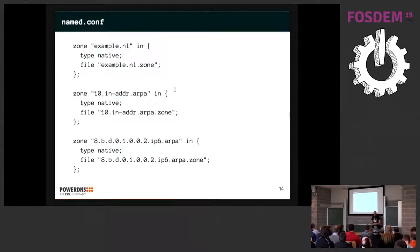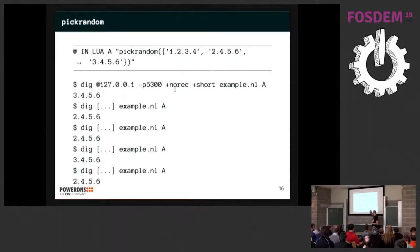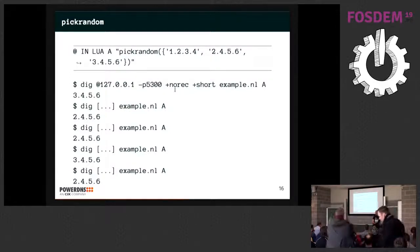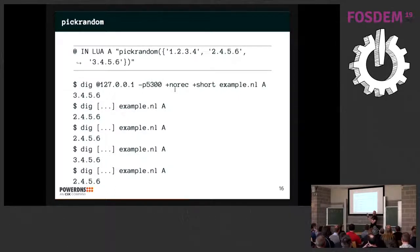Here is the named.conf with example.nl and two reverse zones. This is the whole zone — if you get the slides, you can copy-paste it and it'll work. For example.nl, I created a LUA A record with pick random with a couple of addresses. I wanted to give a live demo, but I don't really like the demo gods — and I don't have HDMI on my laptop. So you just have to believe me: I have a list of three addresses, and every time I run a dig against the name server, I get a random answer.